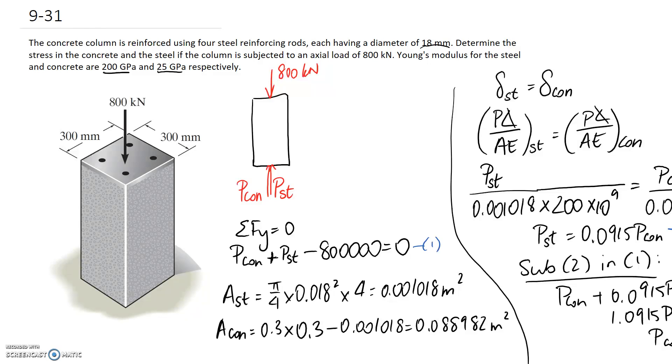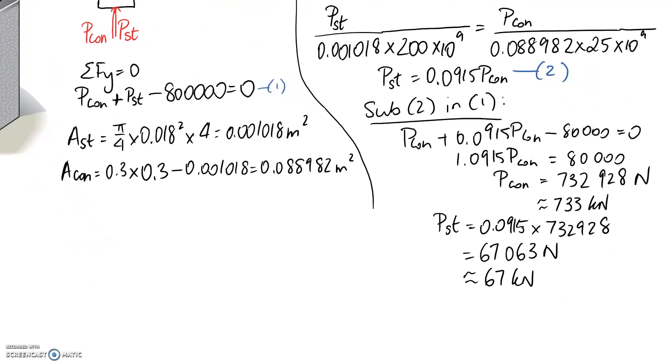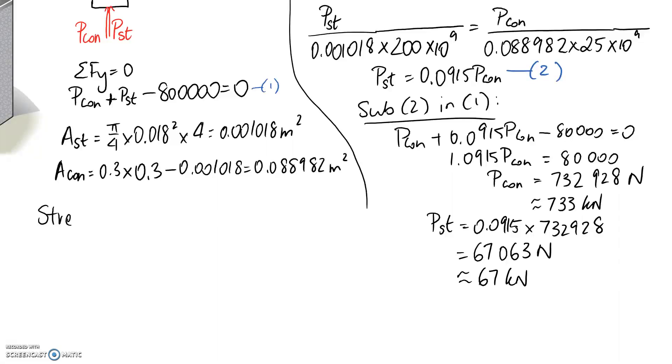So the final step is just to convert these numbers into a stress. If we start with the steel, our equation for normal stress is equal to the force divided by the area. So the force that we found in the steel is this value here. I'm going to substitute it in newtons. And the area of the steel we pre-worked out as well. And because both of these are in base units, I'm going to end up with base units out for my answer, which is pascals.